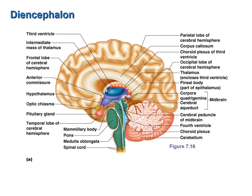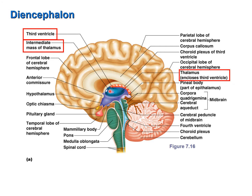When identifying the components of the diencephalon, the third ventricle is our point of reference because the diencephalon surrounds it. The walls of the third ventricle are the thalamus. In some individuals, those walls are connected by a mass of nerve tissue called the intermediate mass of the thalamus.